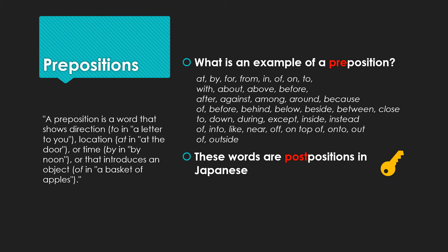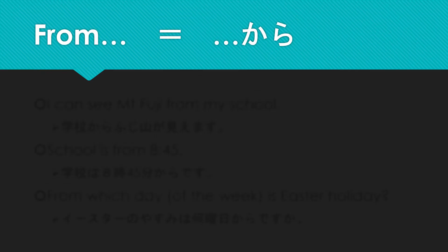So I hope you now have a clearer idea of what a preposition is and how it works in Japanese grammar. Let's start with the first subheading: 'from.' The word 'from' — from one o'clock, from school, from the top of the mountain — this preposition in Japanese is translated as kara, and it goes after the word.